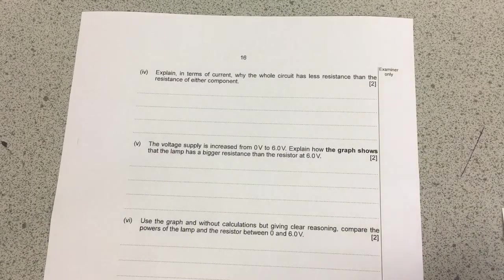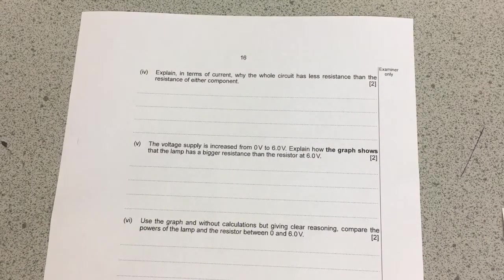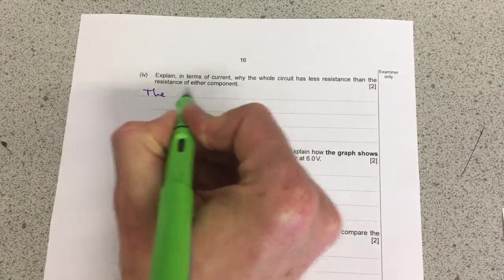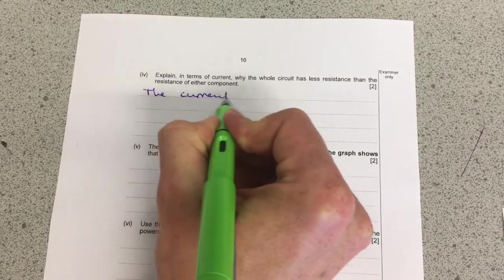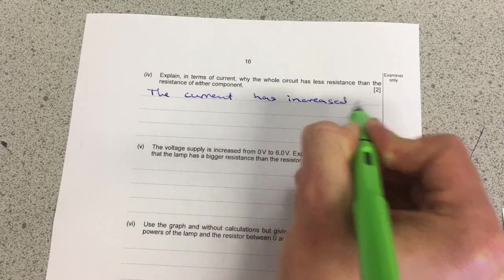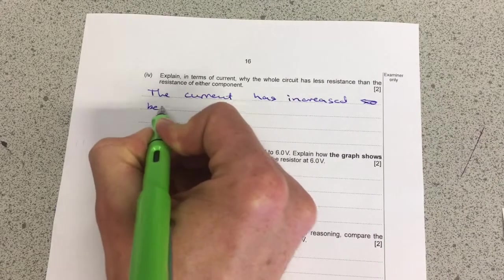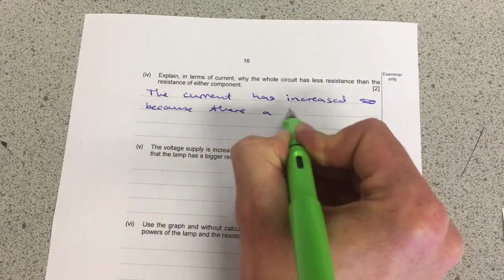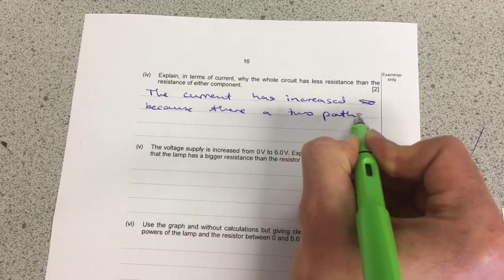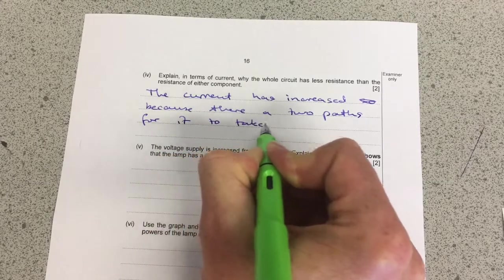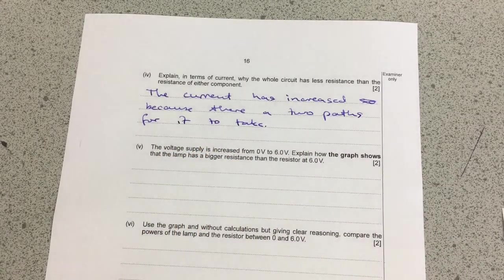So in the next part, it wants us to explain how the whole circuit has a lower resistance when we have two components in it. So what is it? Because there are two paths for it to take. So it can go through either the lamp or through the resistor. So there's twice as much current essentially.